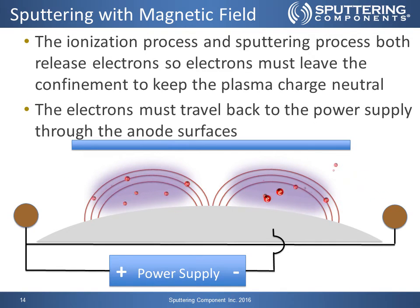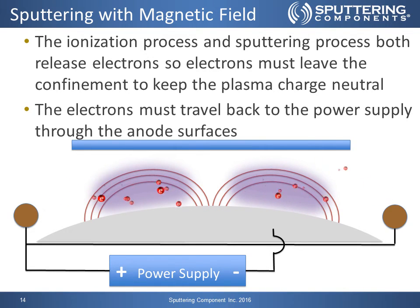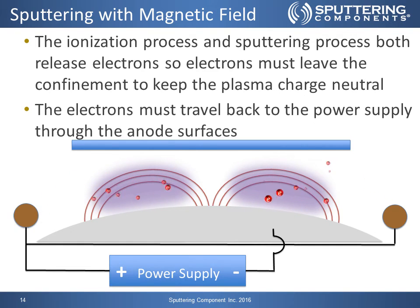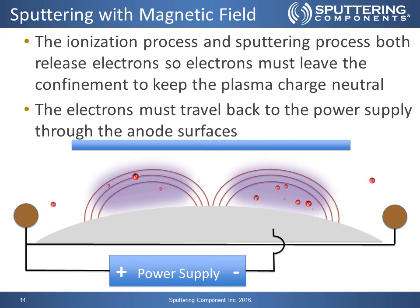Since our plasma is neutral, the ionization process and sputtering process both release electrons, so the electrons must leave the confinement to keep the plasma charge neutral. If we take a cross section of our cathode, which would have two magnetic confinement loops, the electrons would actually be traveling into the plane on the left-hand side, going around a turnaround and coming back out of the plane of view on the right-hand side, then going into a turnaround outside of our view. Each time electrons are added into the system, we have to have electrons coming out of the magnetic confinement and going into our anode surfaces.